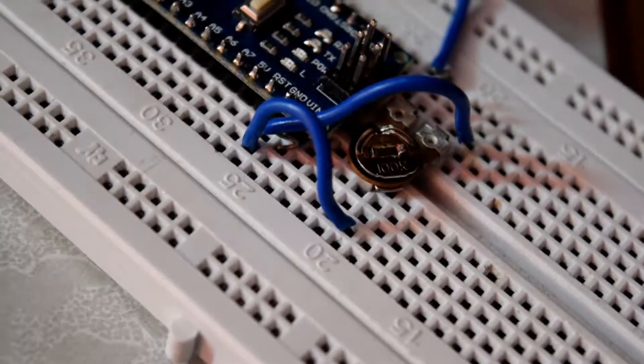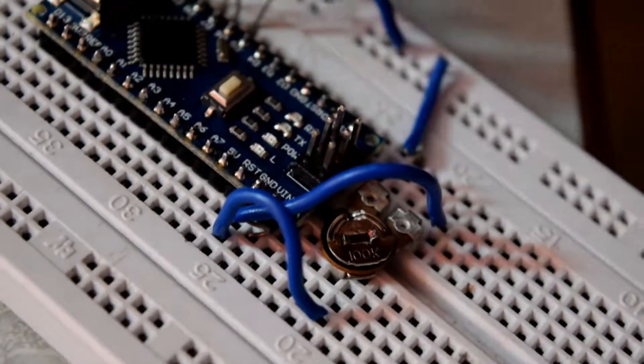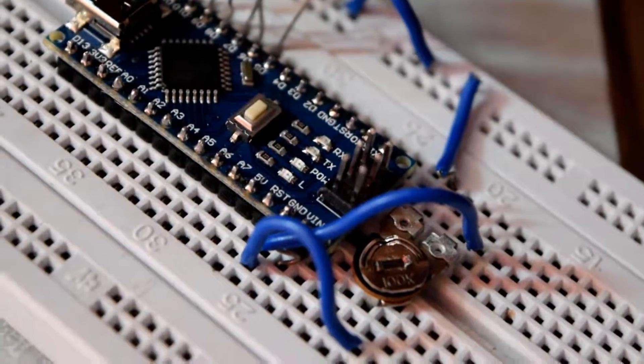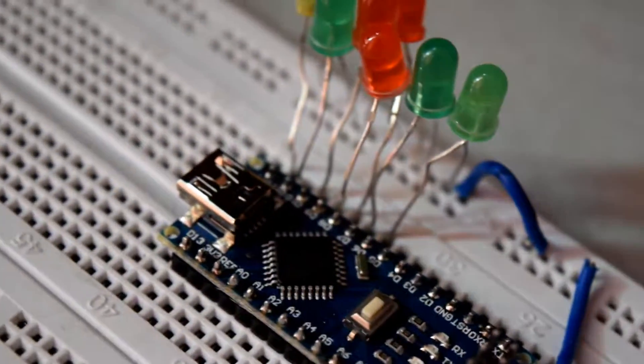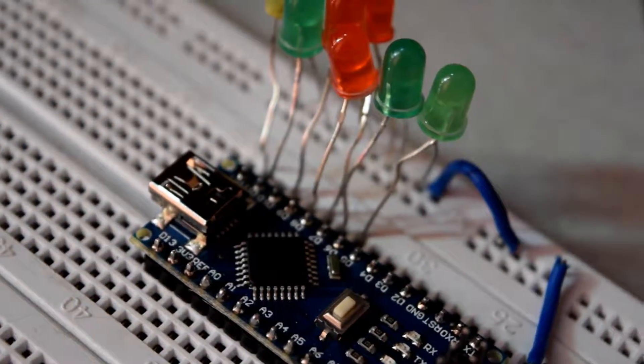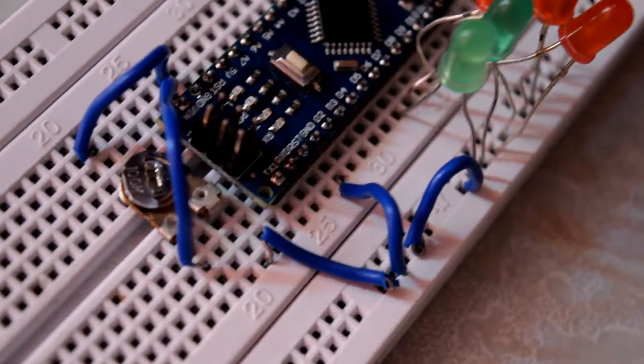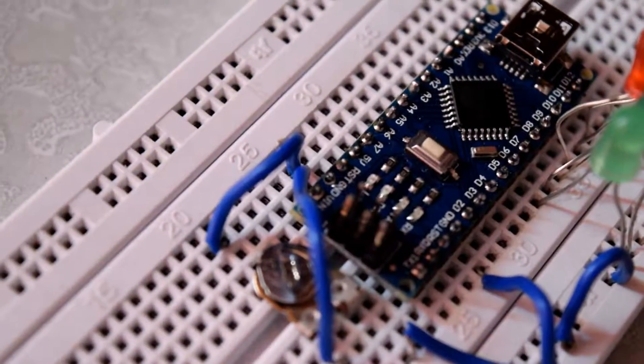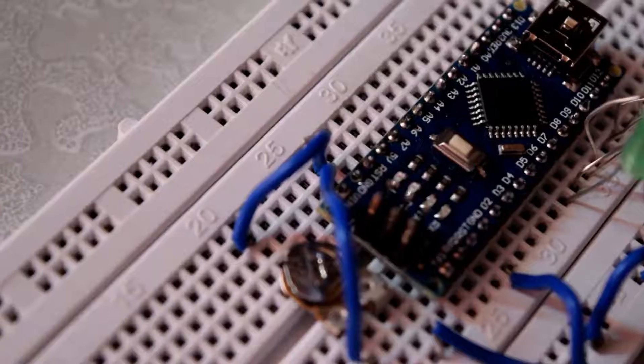Now connect the ground pin to the cathodes, which are the negative terminals of the LEDs. Give the power supply through a 9-volt battery and your circuit is ready.